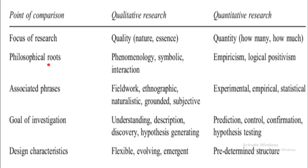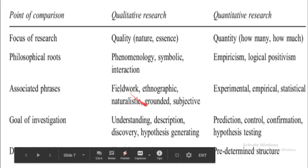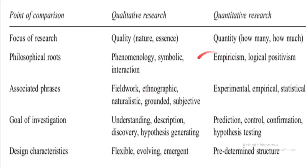The philosophical route for qualitative is phenomenology, symbolic interactionism. For quantitative, the philosophical routes are empiricism and logical positivism. Associated phrases for qualitative are fieldwork, ethnography, naturalistic, grounded, and subjectivity. For quantitative, the associated phrases are experimental research, empirical, and statistical.